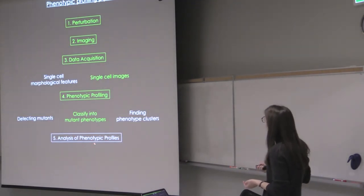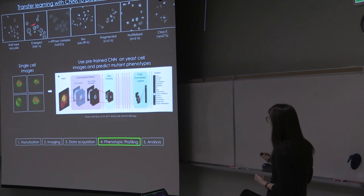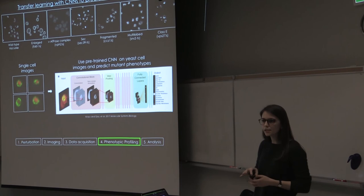As well, for my future direction, I want to apply the single cell images to classify mutant phenotypes. And for that, the approach that I will take is from this paper that my lab published a year ago. And I will be working on a convolutional neural network that is trained on yeast cell images.